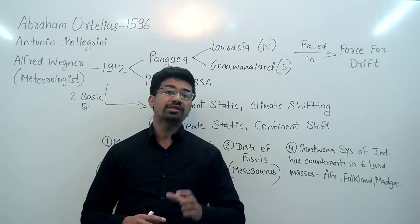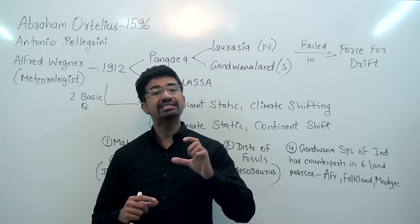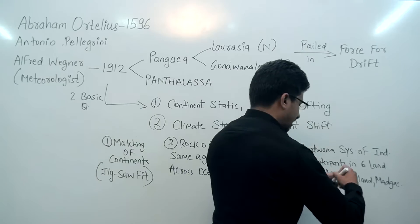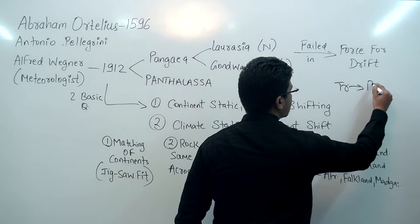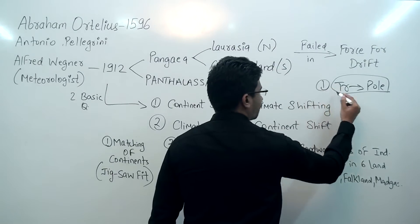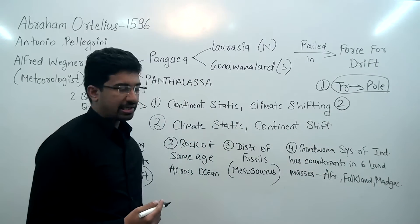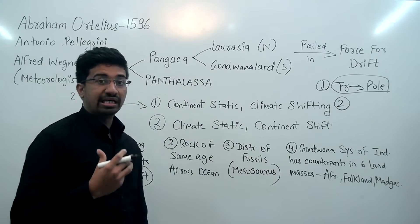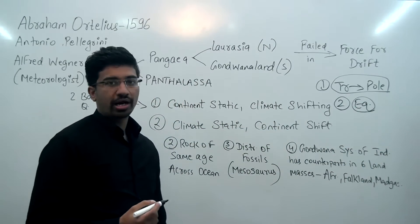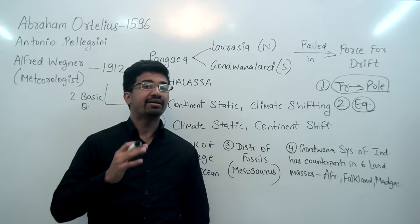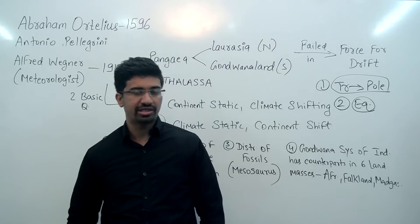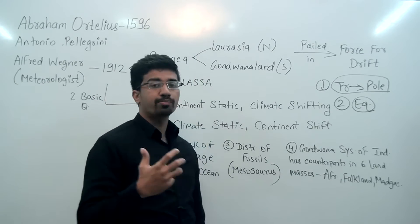When you get coal formation — coal like bituminous coal, which requires dense evergreen forest to form — you find it in polar regions like Canada and Russia. The first question is: how did this tropical-region coal end up at the pole? The second question is about glacial formations — we find evidence of glaciers near the equator. How did glaciers get here? These two basic questions needed probable answers.